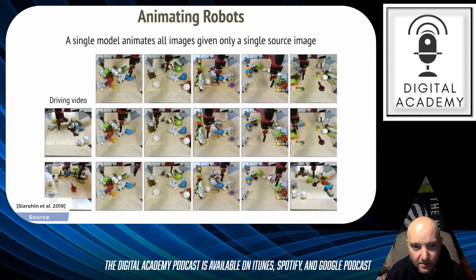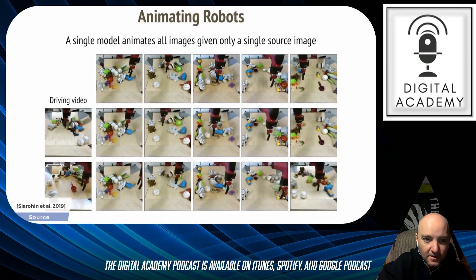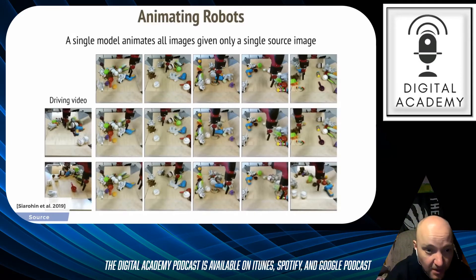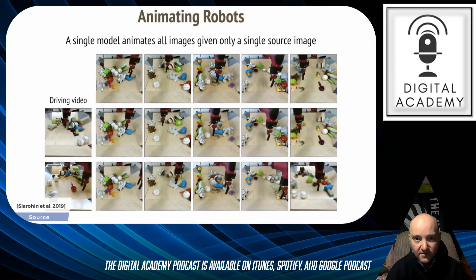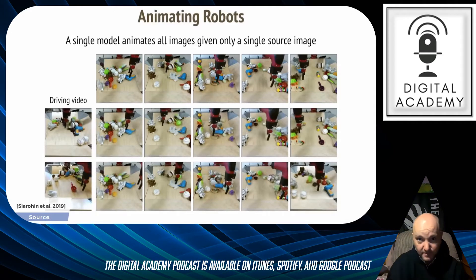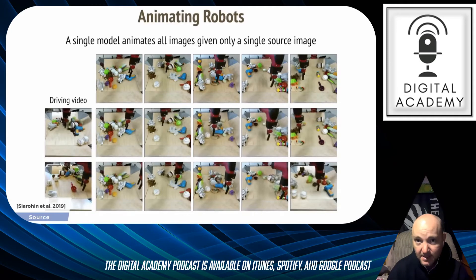Don't miss out — make sure to have a look in the video description. You can see there on the bottom left of the video, it says Sir Ronan et al., 2019, as the source research paper — on how a single model animates all images, giving only a single source image. The other way of saying that is: with just one picture of me, you can make a whole video of me saying something I didn't say.